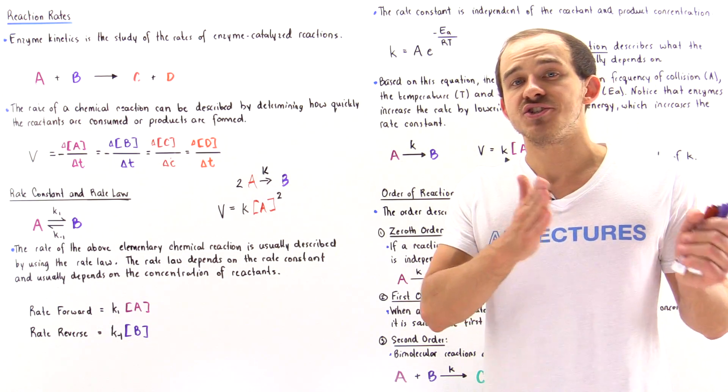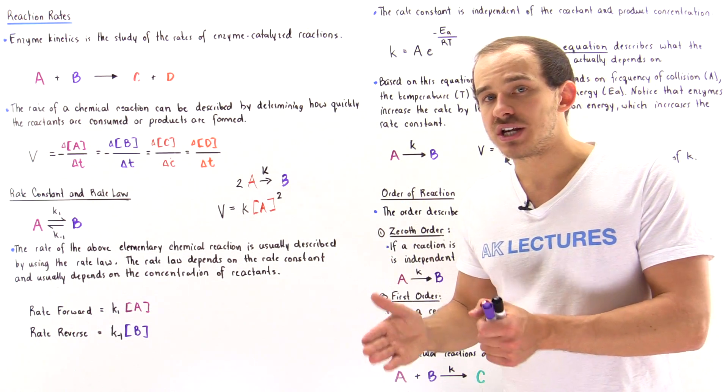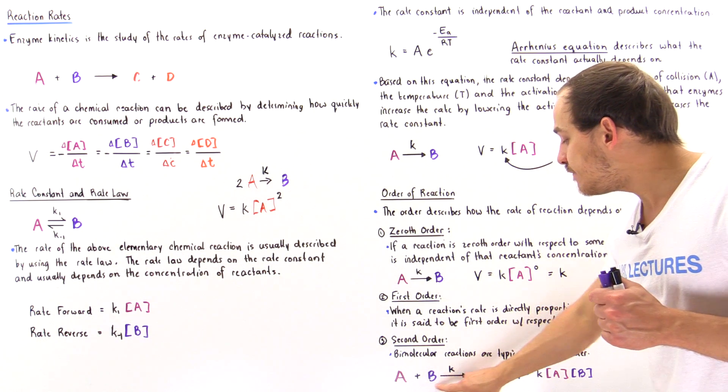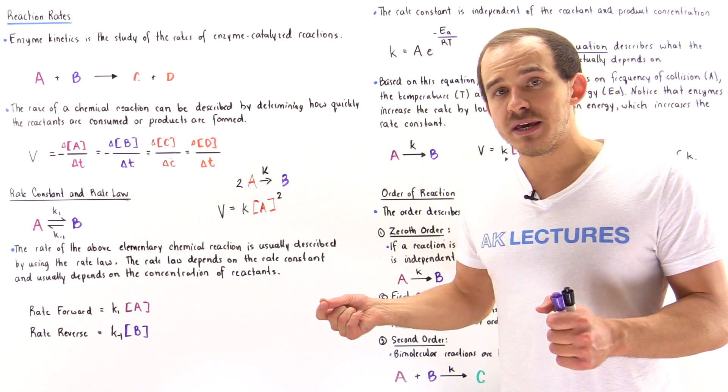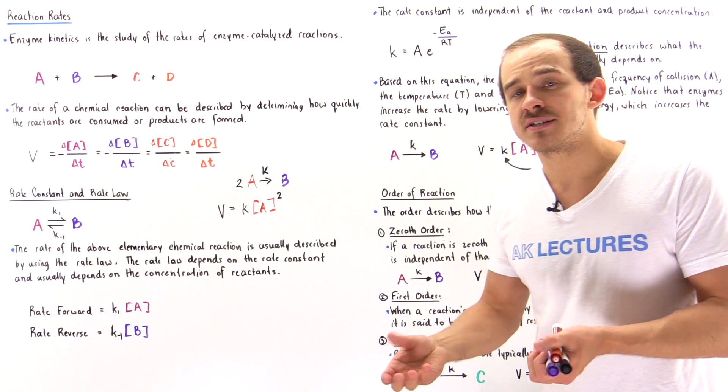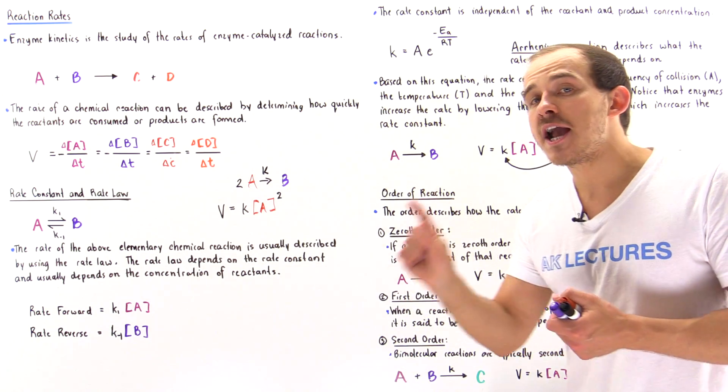This will be known as a pseudo first order reaction, and that's because if we have lots of B, increasing or decreasing B basically does nothing to the rate. But if we have very little A, then changing A will have a drastic effect.